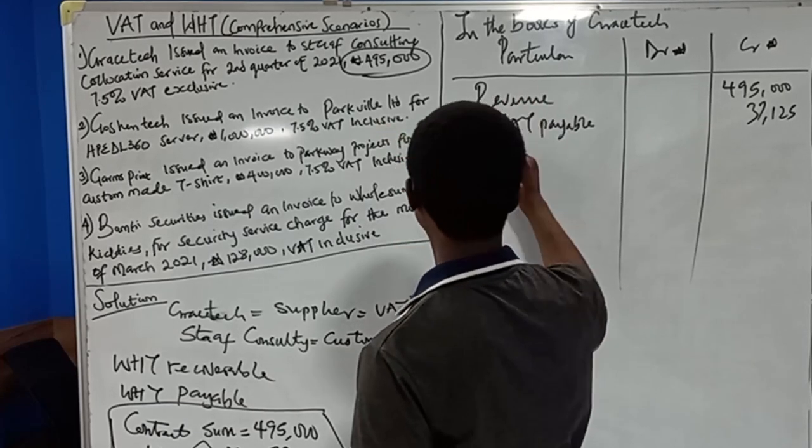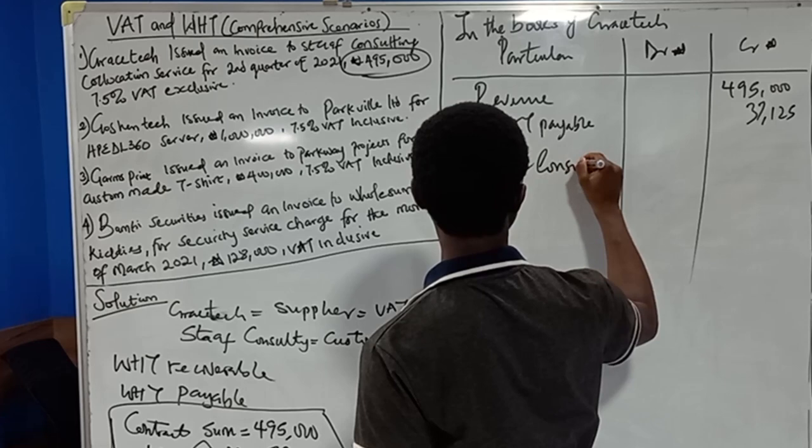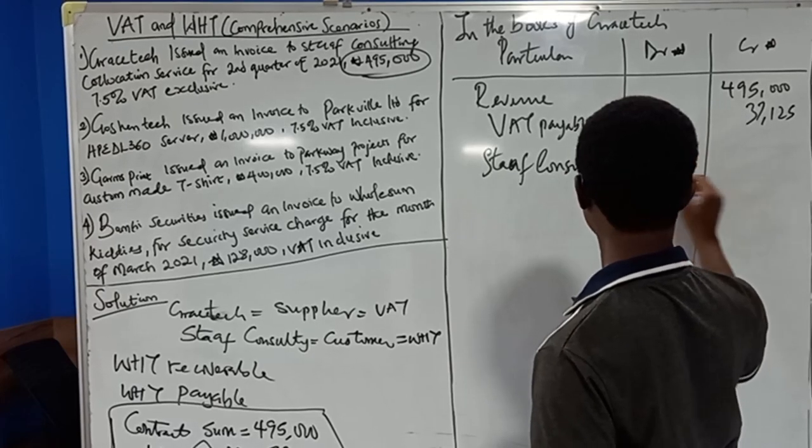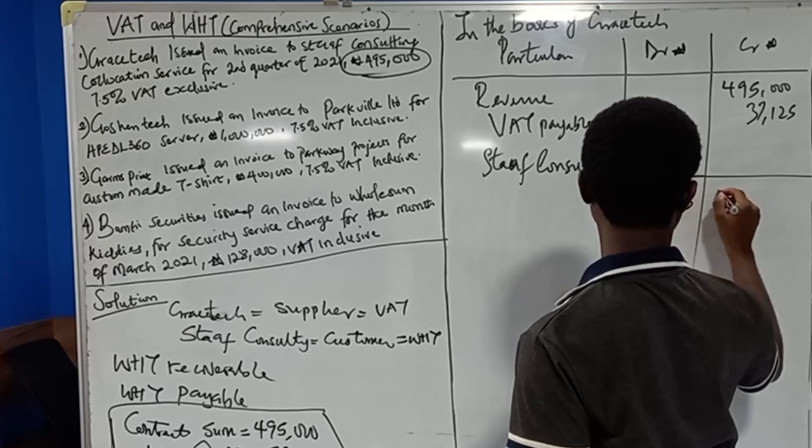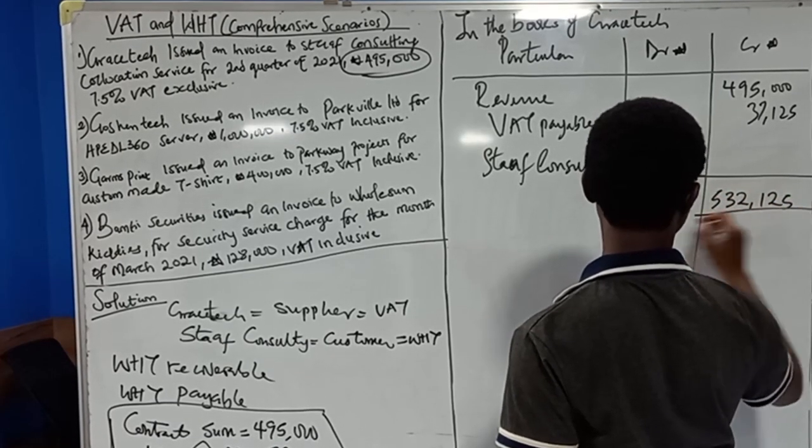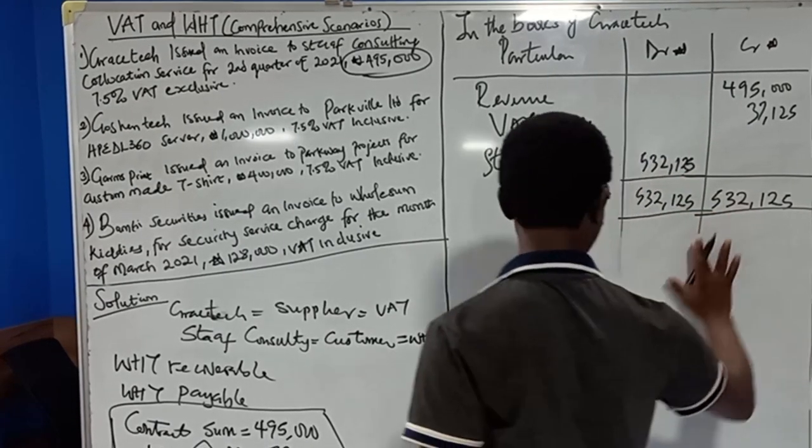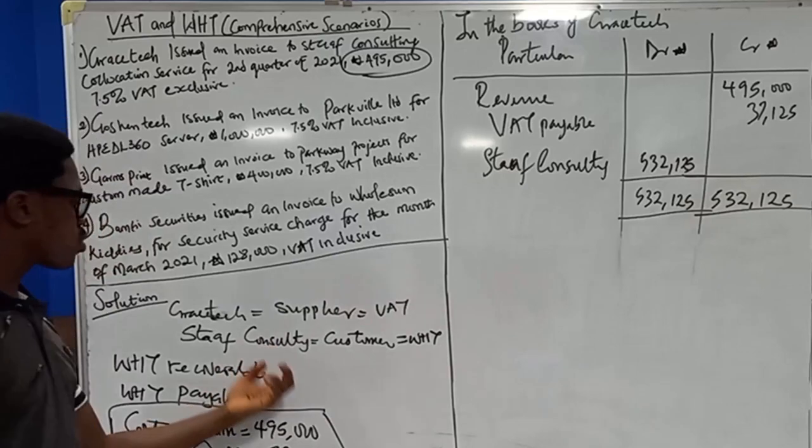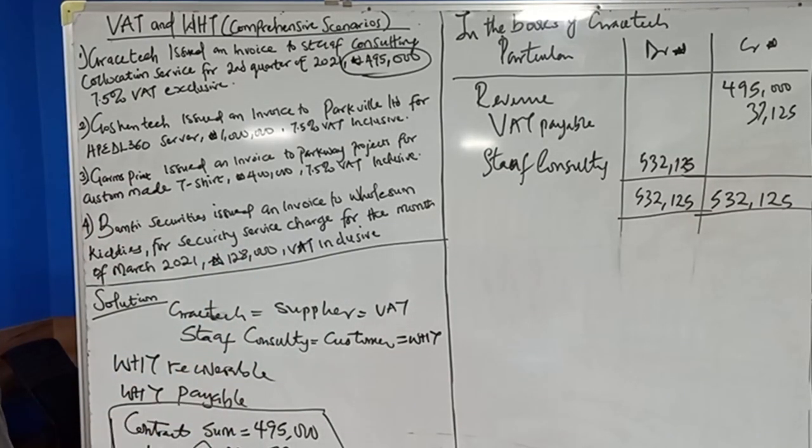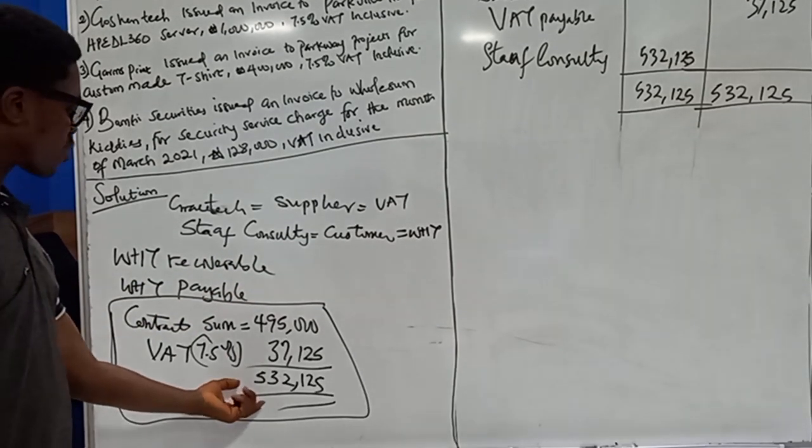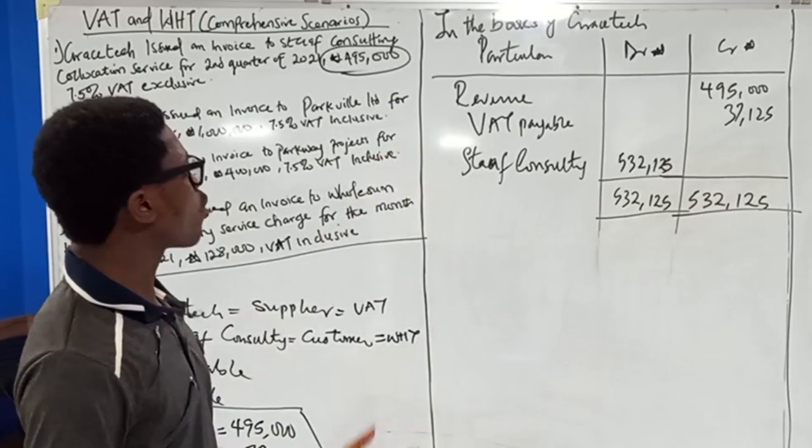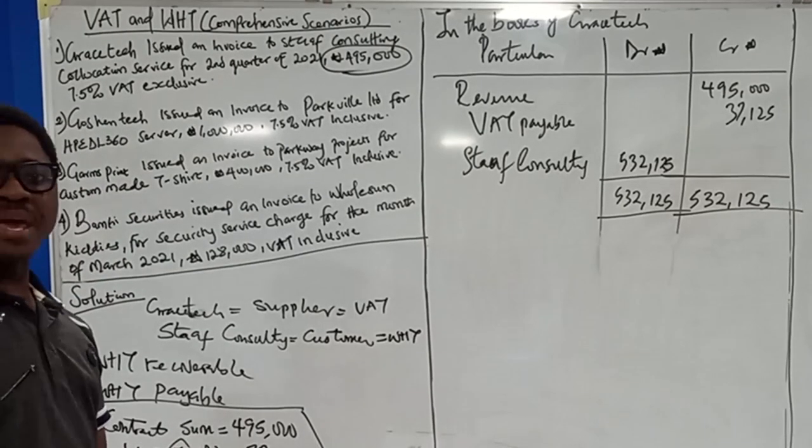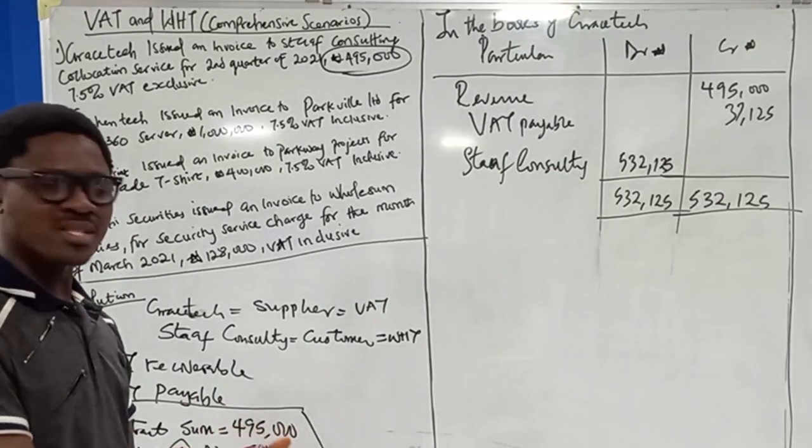Staff Consulting account, in the books of GraceTech, will be debited with 532,125. It is important to note that this should be the accounting treatment in the books of GraceTech.